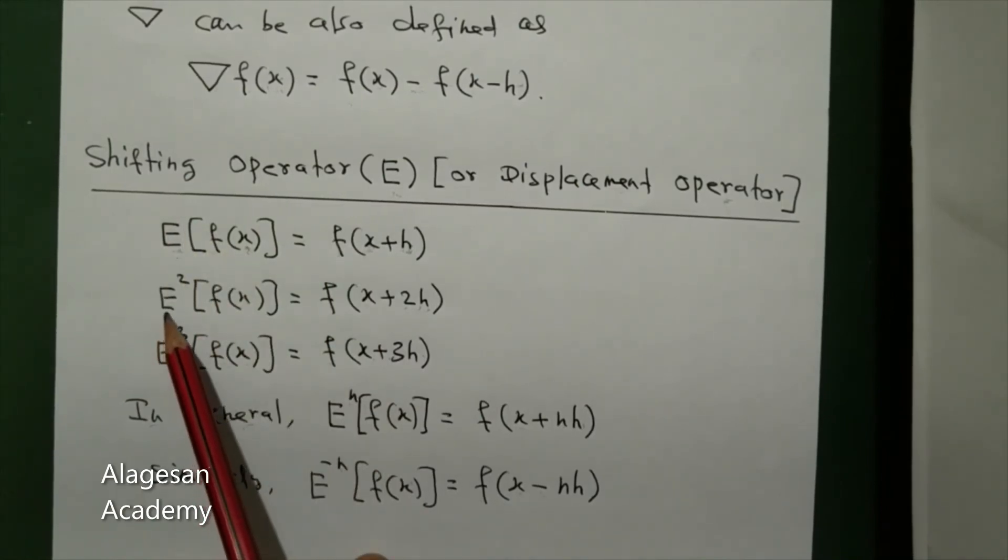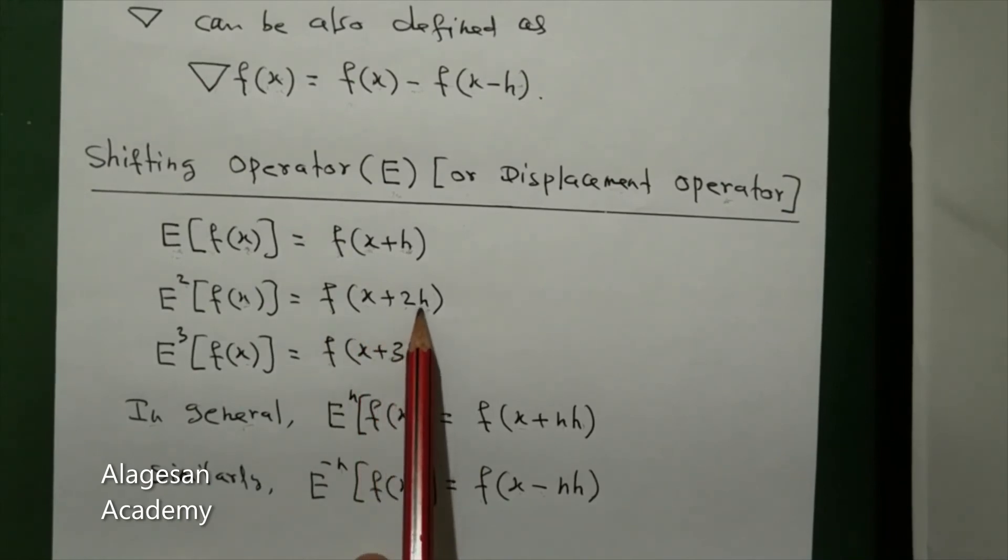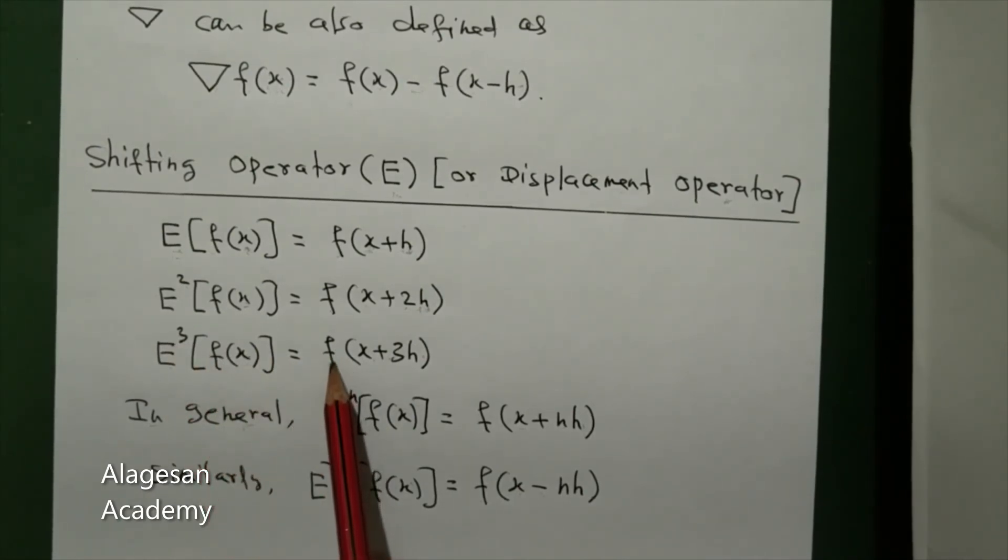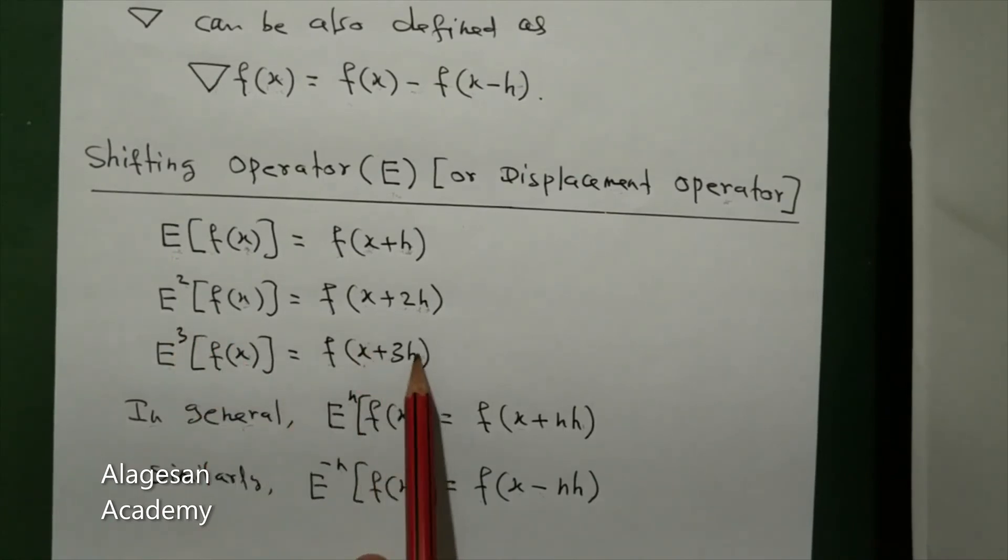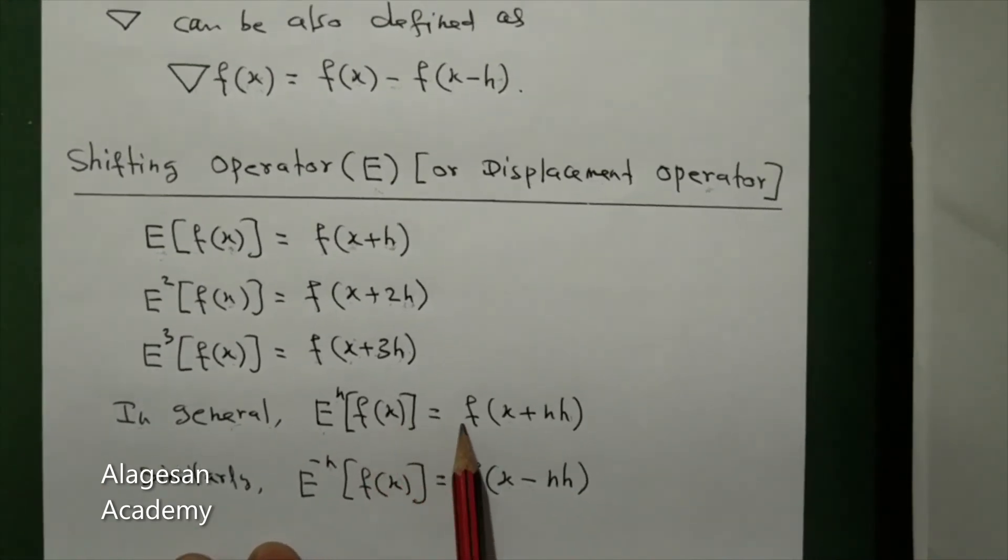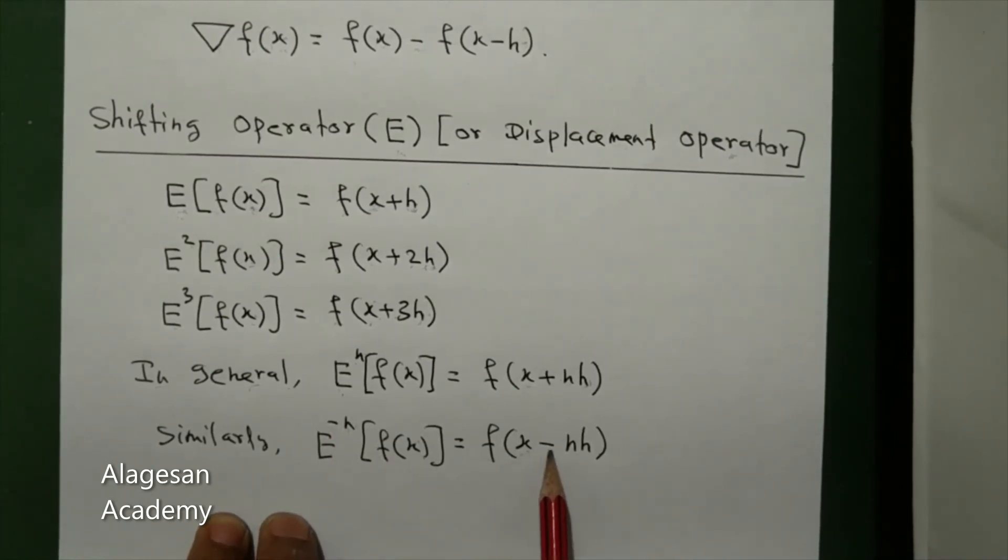E square f of x is f of x plus 2h. E power 3 f of x is f of x plus 3h. In general, E power n f of x is written as f of x plus nh. Similarly, E power minus n f of x is f of x minus nh.